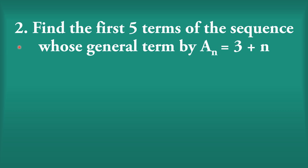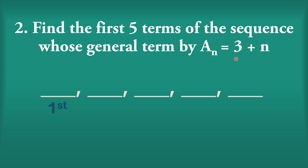How about example number 2? We need to find the first 5 terms. The given general term is a sub n is equal to 3 plus n. Replace n by 1: 3 plus 1 is 4. Replace n by 2: 3 plus 2 is 5. Replace n by 3: 3 plus 3 is 6. The pattern — the number added to get each next term — is 1.